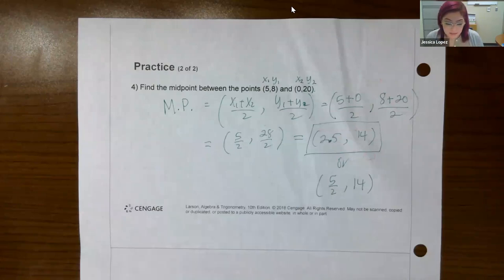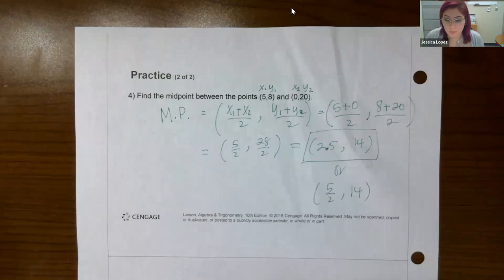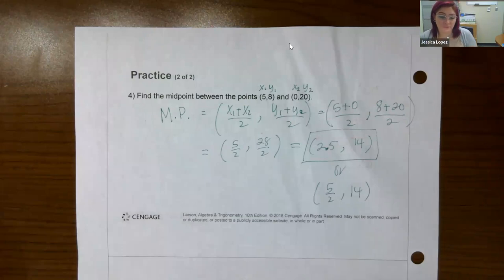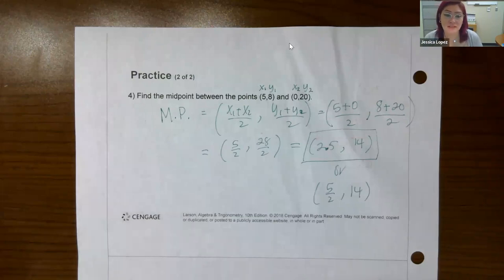That's it for section P.6 — basically how to plot points, how to write the coordinates of points, how to find the distance between two points, and how to find the midpoint between two points.